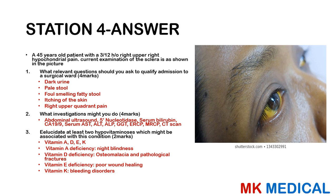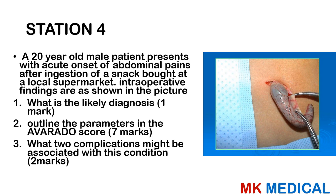Further investigations include endoscopic retrograde cholangiopancreatography (ERCP), magnetic resonance cholangiopancreatography (MRCP), and CT scan — remember to write these in full in your exam, not as abbreviations. The fat-soluble vitamins A, D, E, and K will be affected. Vitamin A deficiency causes night blindness; vitamin D deficiency causes osteomalacia and pathological fractures; vitamin E deficiency causes poor wound healing; vitamin K deficiency causes bleeding disorders.